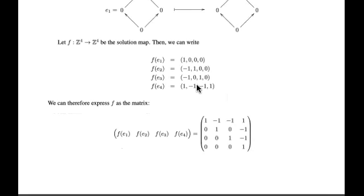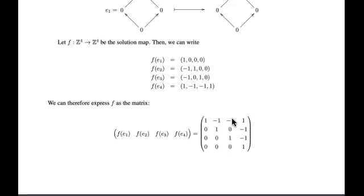Basically, E1 is sent to a tuple with 1 and 0s; E2 is sent to its solution, which can be rewritten in order; E3 is sent to its solution; and E4 is sent to its solution. Then we write these out in a matrix: the image of E1 is the first column, image of E2 is the second column, image of E3 is the third column, and image of E4 is the fourth column. This matrix is the solving matrix.